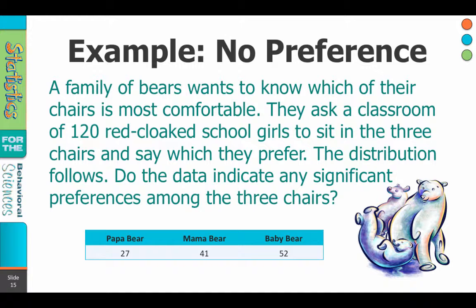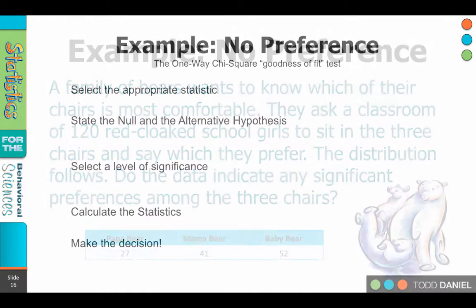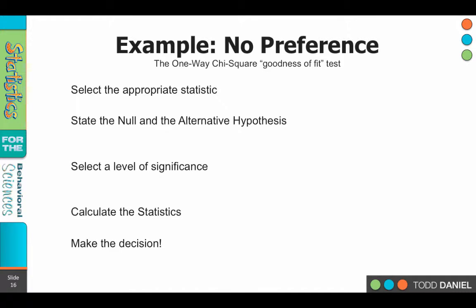Well, let's run a chi-square on these data and find out what we learn. Number one, what is the appropriate statistic for this test? The one-way chi-square.